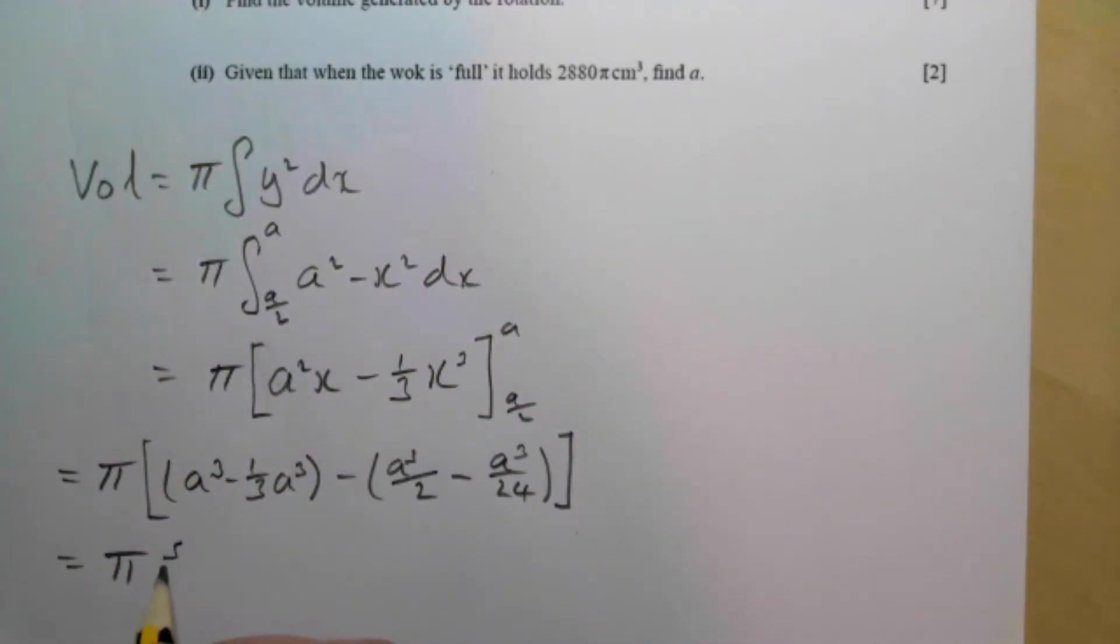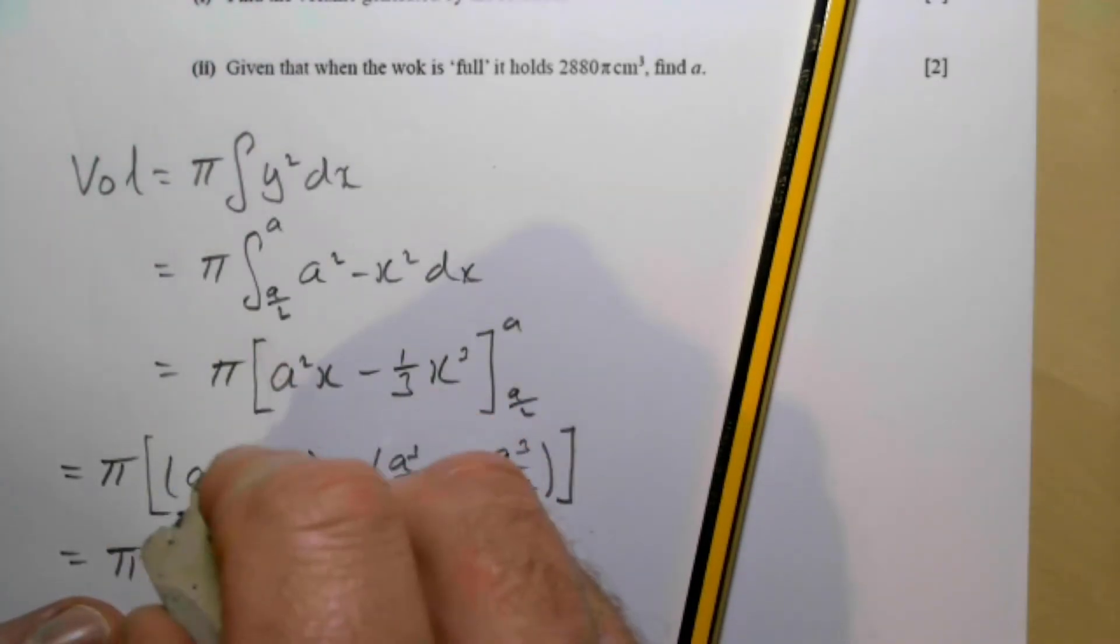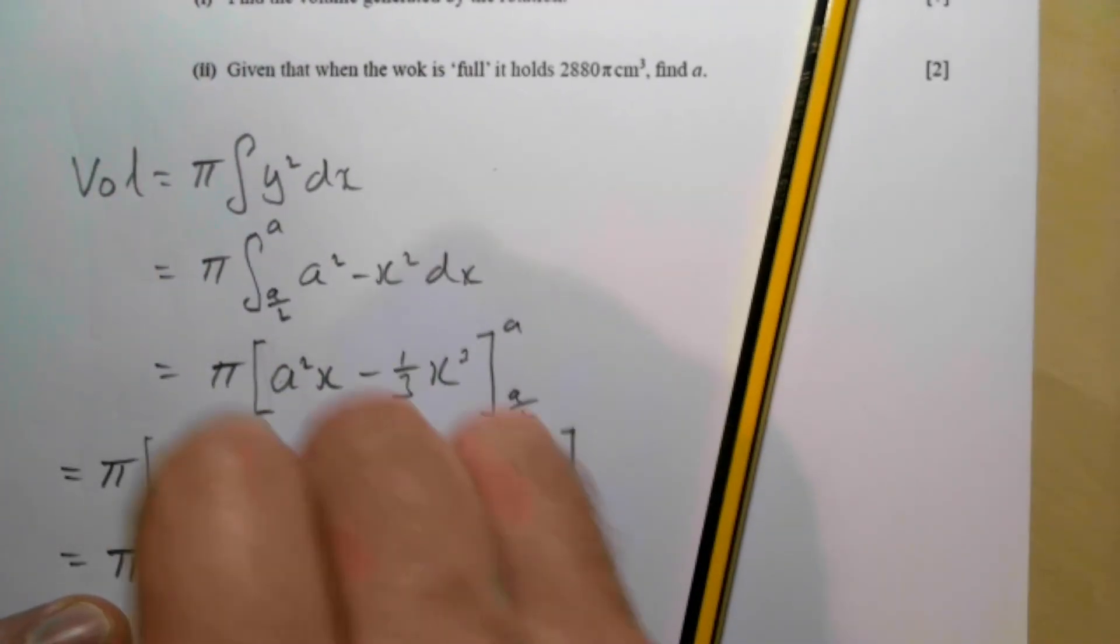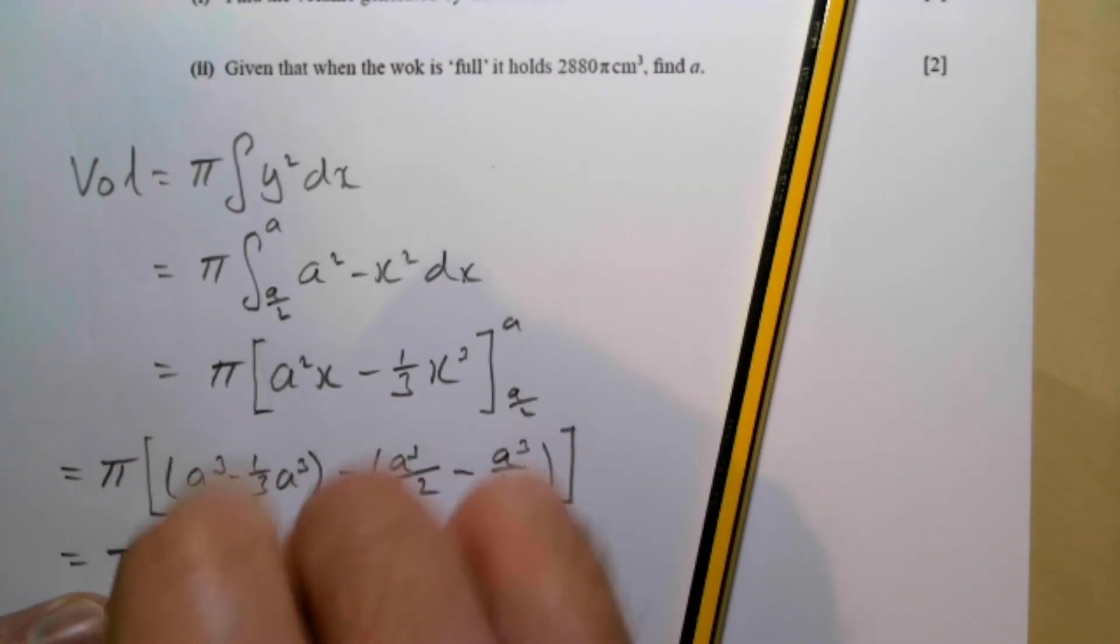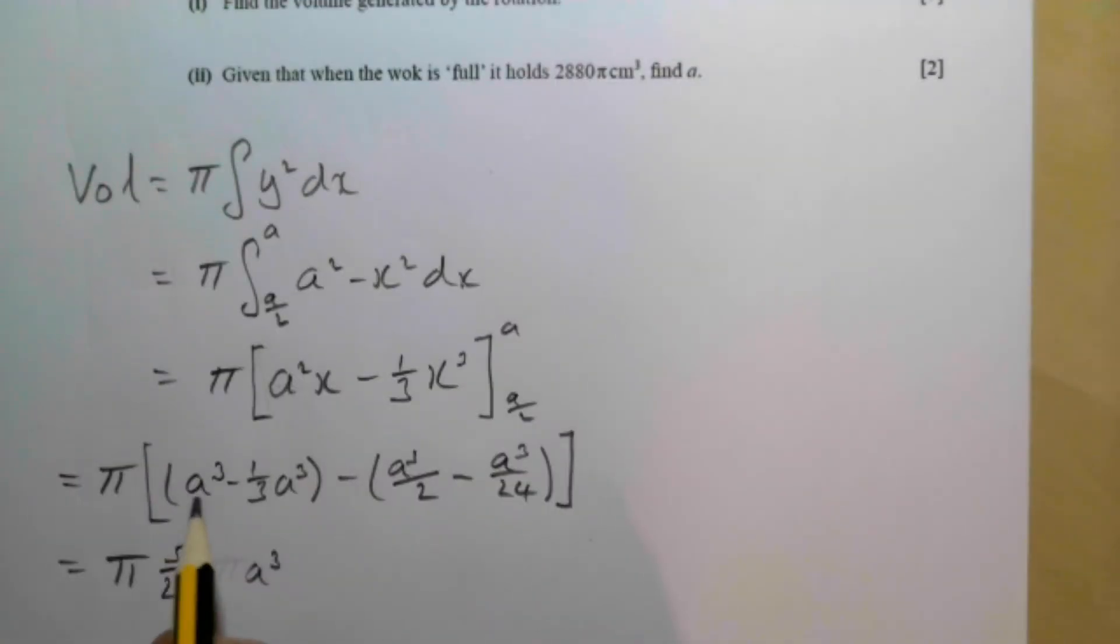And we end up with pi a cubed, I'll take my word for it. Pi times 5 over 24 a cubed. Sometimes it's easier to change these all into something over 24. So that's your common denominator. And work out from there. But that's your answer to part 1.